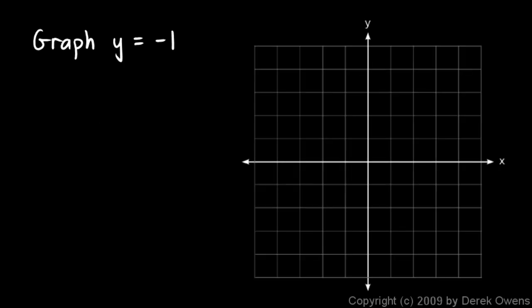Now let's graph the line y equals negative 1. Let's find some points — x could be anything. We could have x is 2 and y is negative 1, or we could have x is negative 3 and y is negative 1. So if we plot those points...